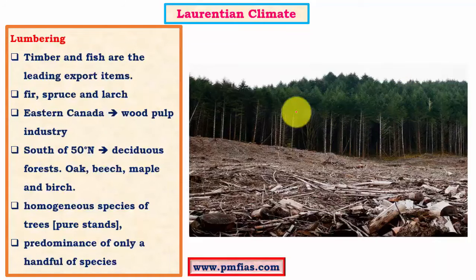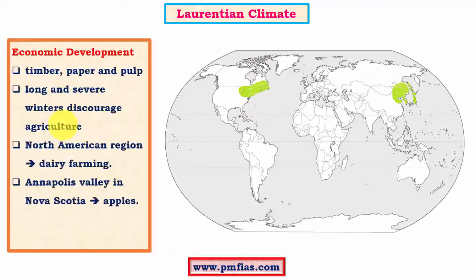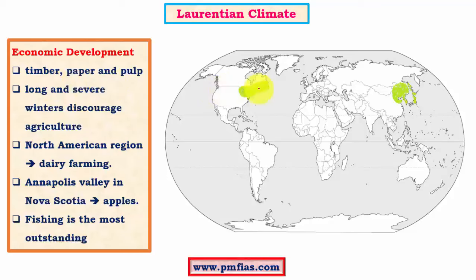Lumbering is a very significant economic activity in this region. Trees occur in pure stands, which aids commercial exploitation on a large scale. The undergrowth is less dense, important for establishing transportation facilities. There are fewer species, so the same type of trees can be cut for the same purpose. The region has both conifers supplying softwood and deciduous trees supplying hardwood, making it rich in both types of forest resources.